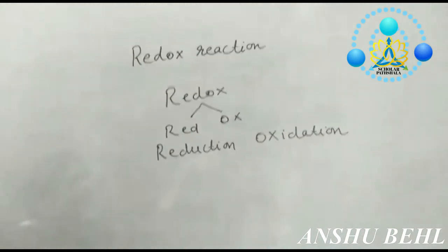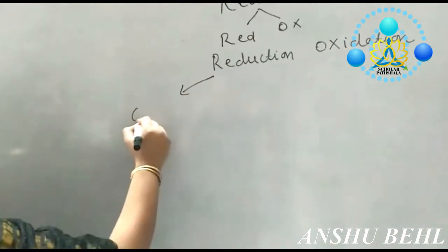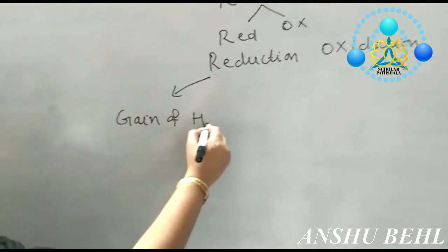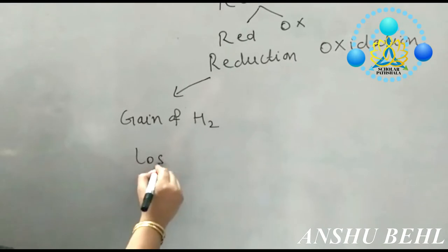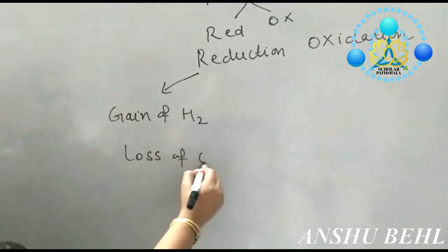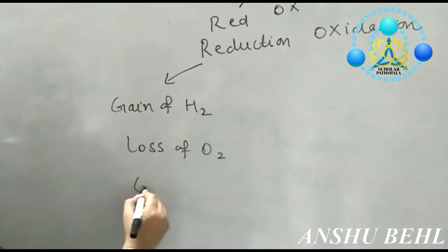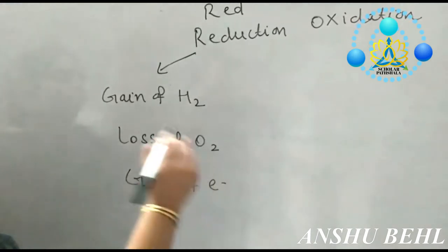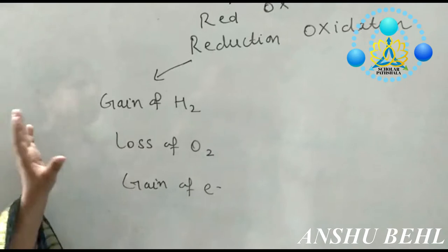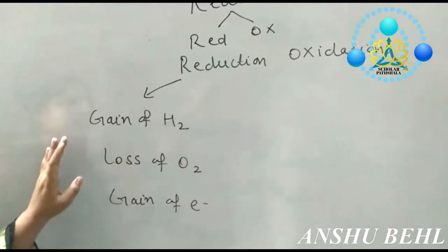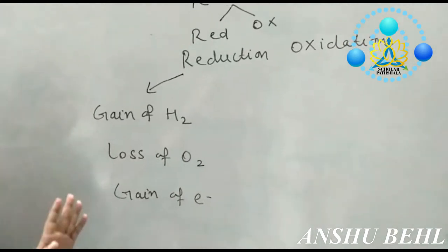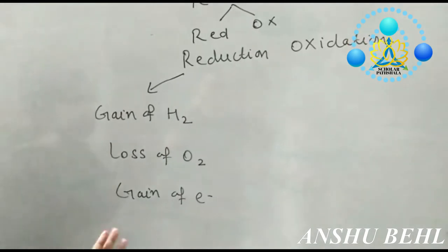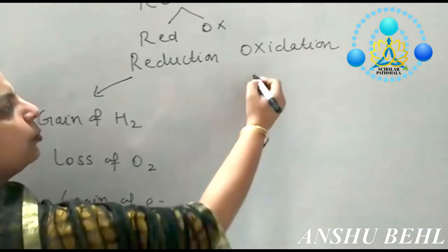What is reduction? Reduction is gain of hydrogen, loss of oxygen, or gain of electrons. Here we can have three concepts. If there is gain of hydrogen, loss of oxygen, or gain of electrons, the reaction is termed as a reduction reaction.